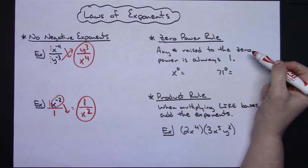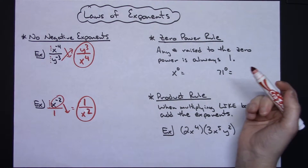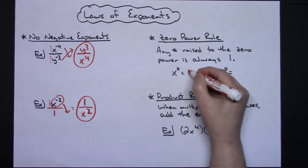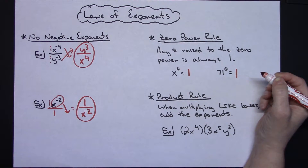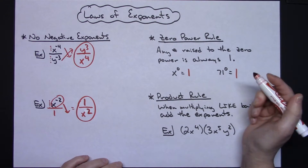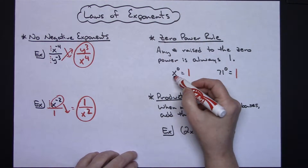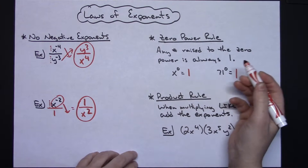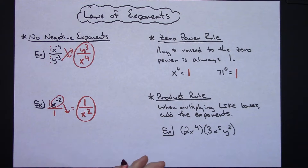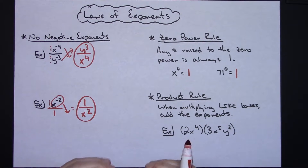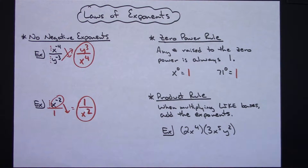There's also a rule that says any number raised to the 0 power is always 1. It really doesn't matter what it is — x to the 0 is 1, 71 to the 0 is 1. Any number raised to the 0 power is always 1. So if it appears in a problem you can cross it out and eliminate it, because when we're simplifying rational expressions and we see something raised to the 0 power, we just cross it out.